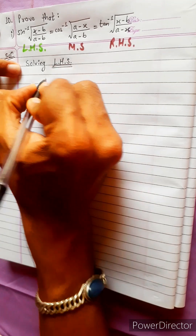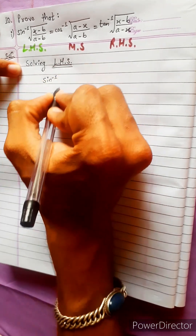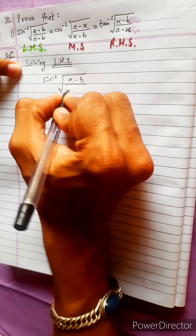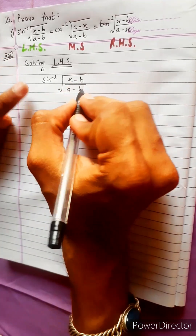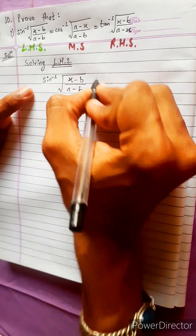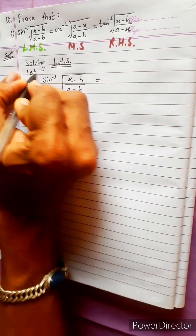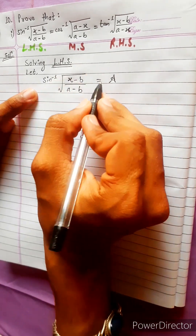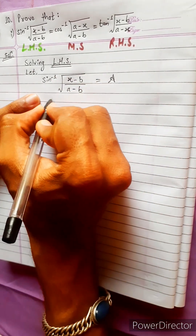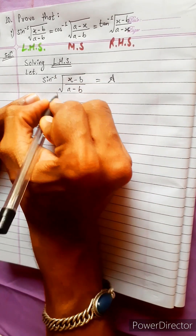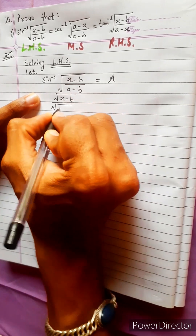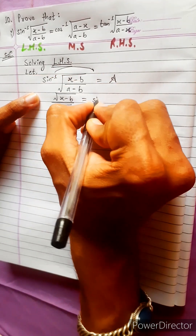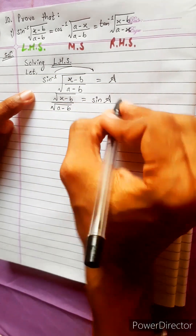LHS equals sin inverse of under root (x minus b) divided by (a minus b). We set this equal to angle A, so square root (x minus b) divided by square root (a minus b) equals sin A. This is equation 1.